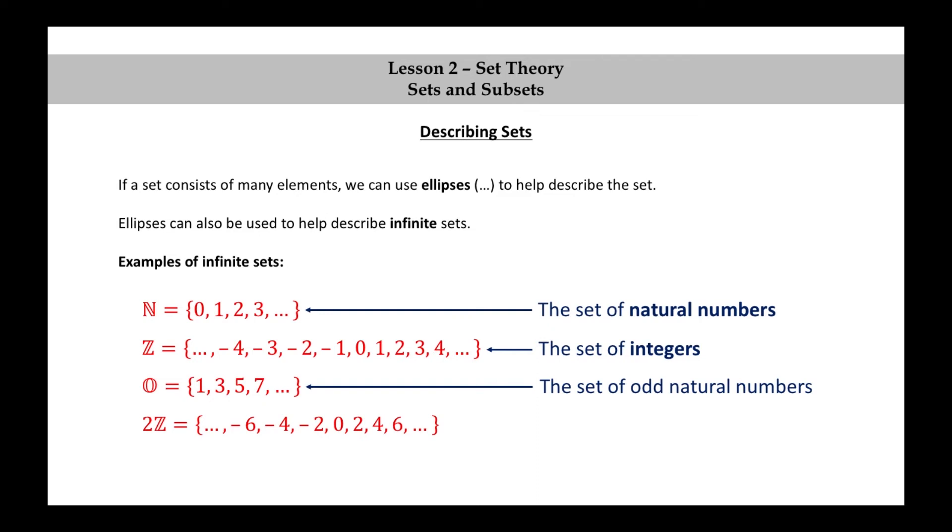2Z equals dot dot dot, negative 6, negative 4, negative 2, 0, 2, 4, 6, and so on. This is the set of even integers.